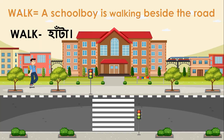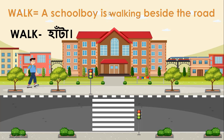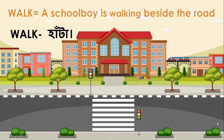Let's start some examples. First example: 'A school boy is walking beside the road.' Here, 'a school boy' is the subject, 'is' is the helping verb, 'walking' is the main verb with '-ing', and 'beside the road' is the extension.